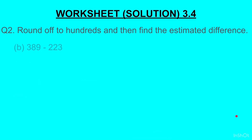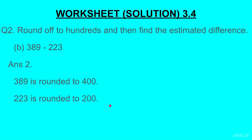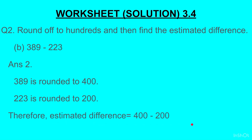Part B: 389 minus 223. 389 rounds off to 400 because at the tens place we have 8; 8 is greater than 5, so 389 rounds up to 400. 223 rounds off to 200 because the tens place has 2; 2 is less than 5, so 223 rounds down to 200. The estimated difference is 400 minus 200, which gives us 200.